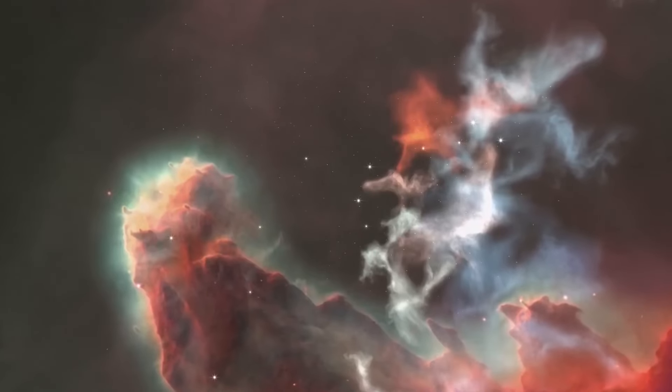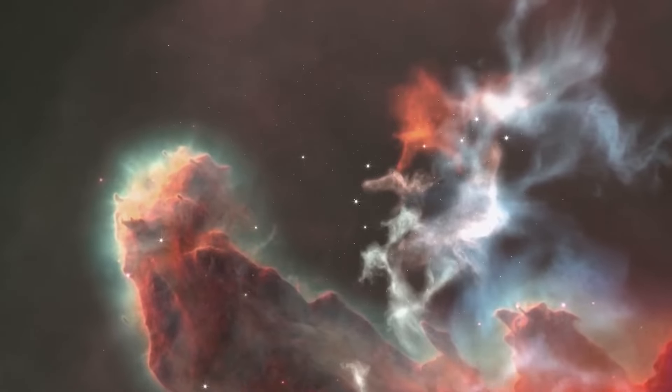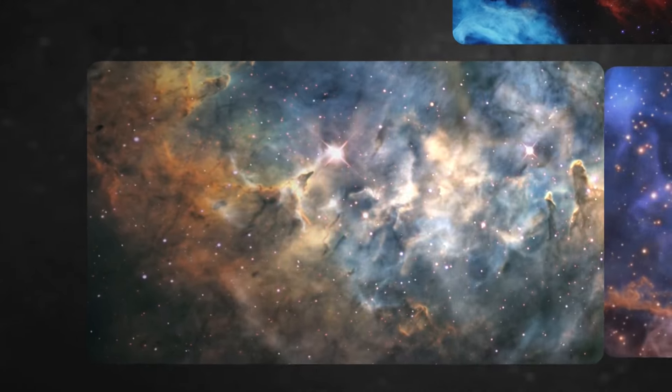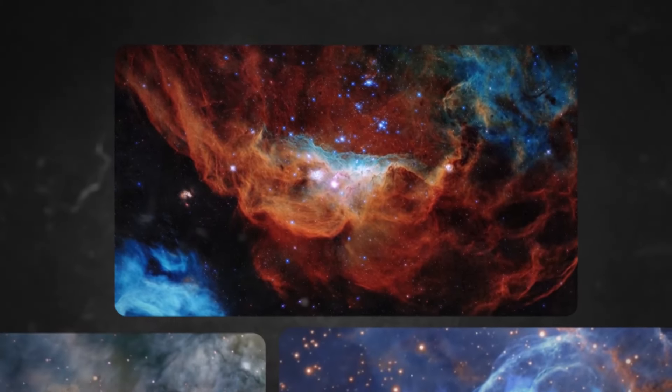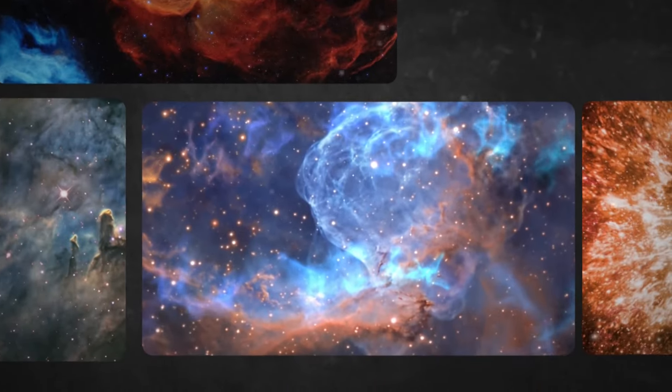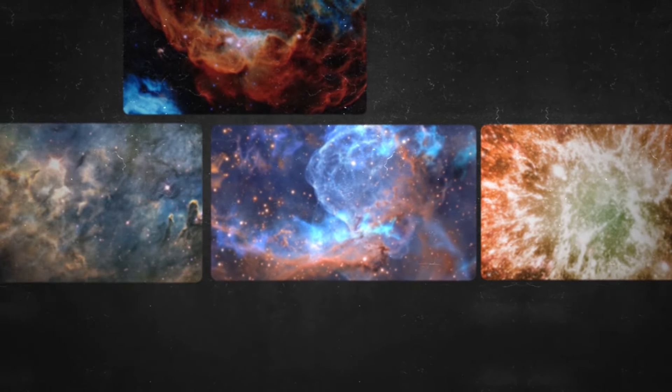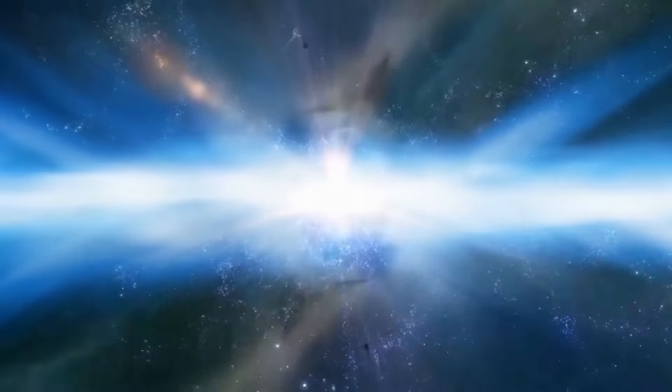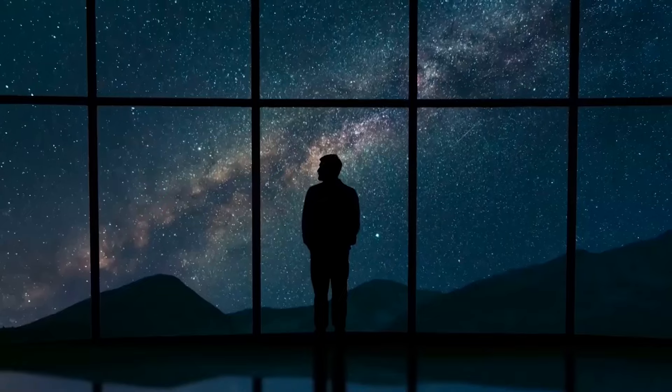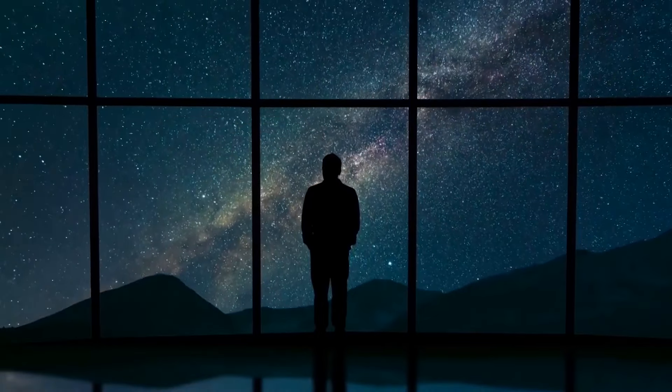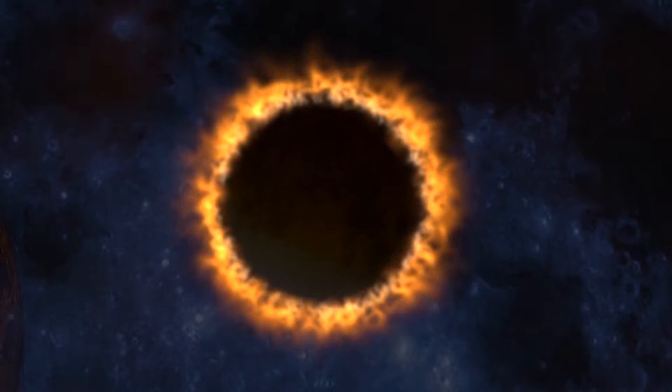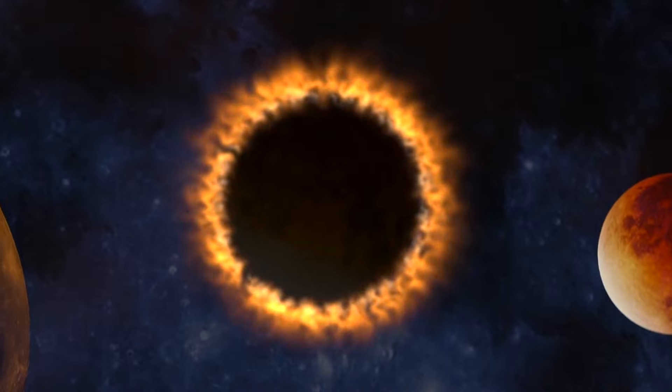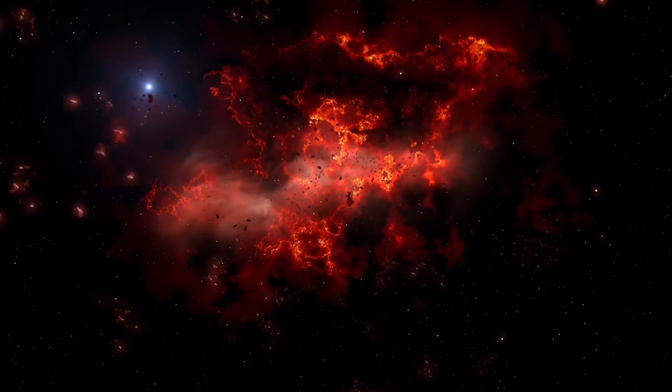She stated, we could expect maybe one exceedingly large structure in all our observable universe. Yet the Big Ring and the Giant Arc are two huge structures and are even cosmological neighbours, which is extraordinarily fascinating. She also said, neither of these two ultra-large structures is easy to explain in our current understanding of the universe. And their ultra-large sizes, distinctive shapes and cosmological proximity must surely be telling us something important. But what exactly? Till now, no one can explain their existence.